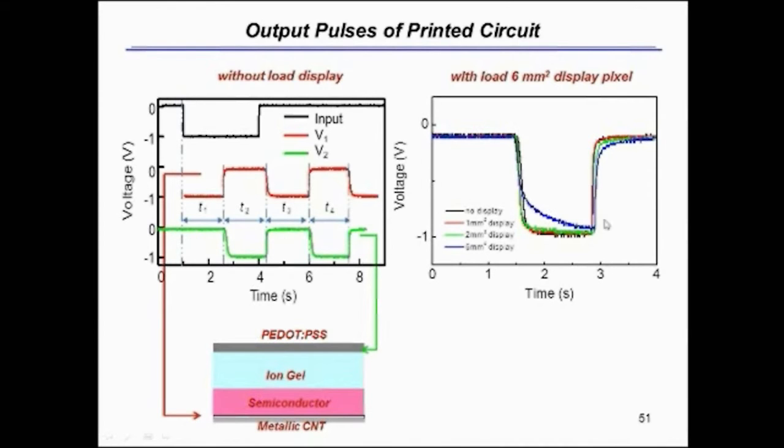And what we've done is to look at these output pulses as a function of the size of the display that we're driving. And you can see that we're driving a rather large pixel. For a couple of square millimeters we still get a very nice shaped pulse. When we start to get up to about six millimeters square, it's big enough that we put enough load on the circuit that this pulse shape deforms a bit.